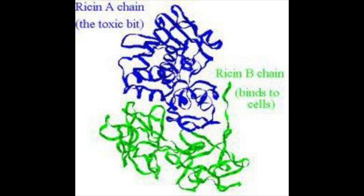Ricin is made up of two polypeptide amino acid chains, A and B. Amino acids are the building blocks of polypeptides, and polypeptides are the building blocks of proteins.